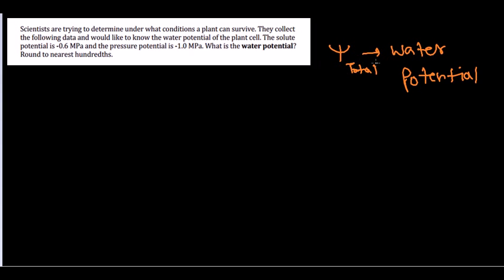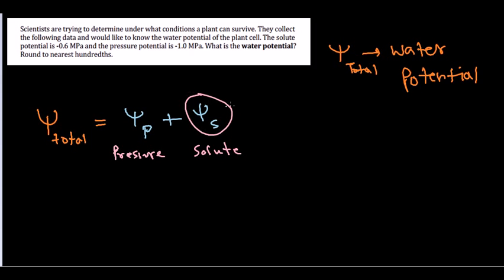The total water potential equals ψp plus ψs. Here, ψp is the pressure potential and ψs is the solute potential. This is the pressure potential and this is the solute potential. The formula for solute potential—there is a different formula to calculate the solute potential if it's not given.